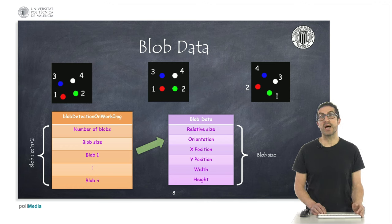The table size actually should be the blob size, which is 6 in this case, multiplied by the number of detected blobs, plus 2. Each blob contains information about the relative size, the orientation, x and y position, and width and height. The x and y position are normalized to the blob center coordinates.